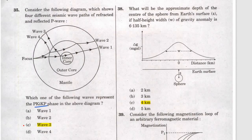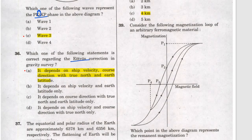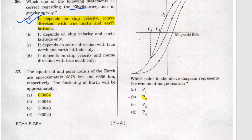Question 35: PKIKP — it is reflected from the inner core; the small i indicates reflection from the inner core, answer is 3. Question 36 is a correction — answer is a. Question 37: they are asking about flattening — polar flattening equals equatorial radius minus polar radius divided by equatorial radius. You should remember 1 by 300 as the approximate value.